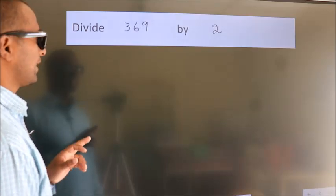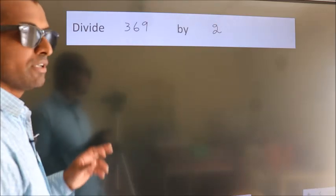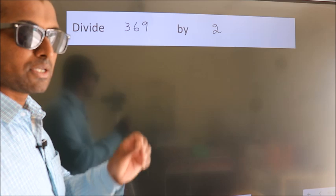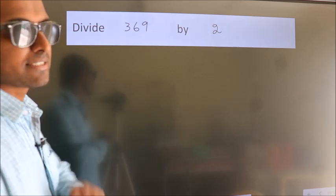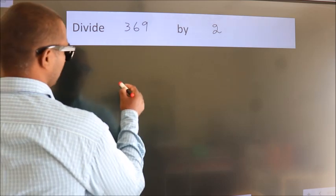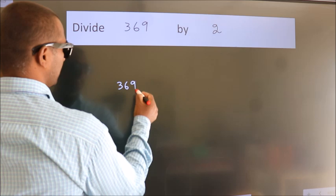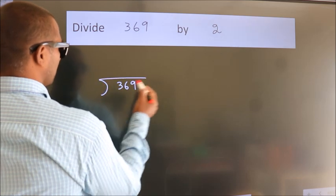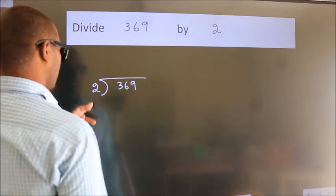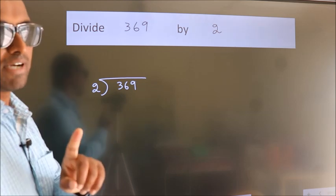Divide 369 by 2. To do this division, we should frame it in this way. 369 here, 2 here. This is your step 1.